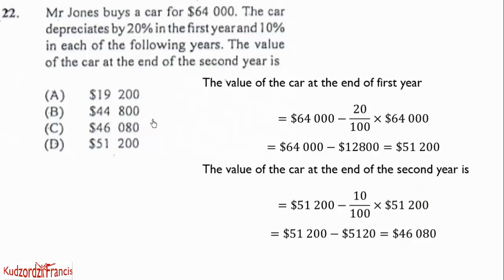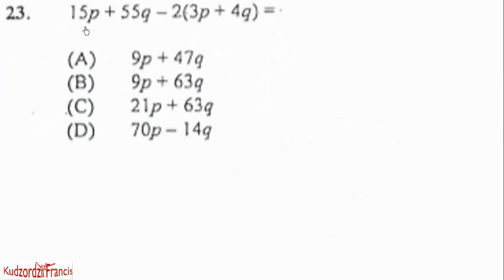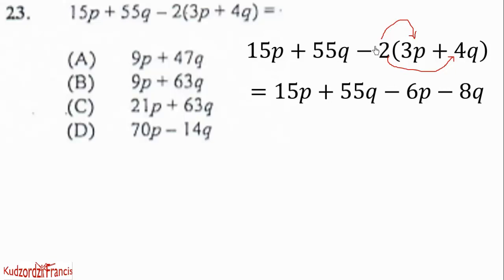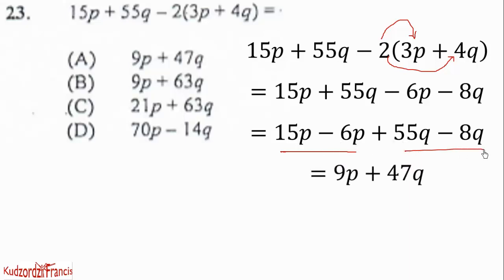Then for question 23, we have this expression 15p plus 55q minus 2 into 3p plus 4q. So we need to expand. Multiply this by this, then multiply this by this. So when you do that, we get negative. Be mindful of the negative. Negative 2 times this gives negative 6p. The negative 2 times 4 gives negative 8q. So now we can regroup the terms by moving this to this and moving this to this. Then that will give us this expression. 15p minus 6p, then 55 minus this. We simplify it to get 9p plus 47q. So 9p plus 47q is option A.